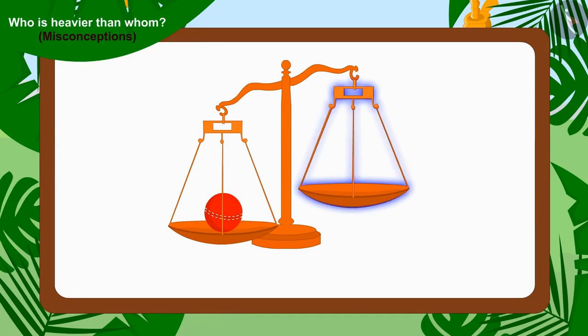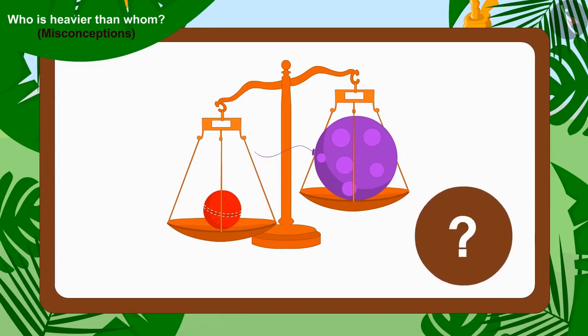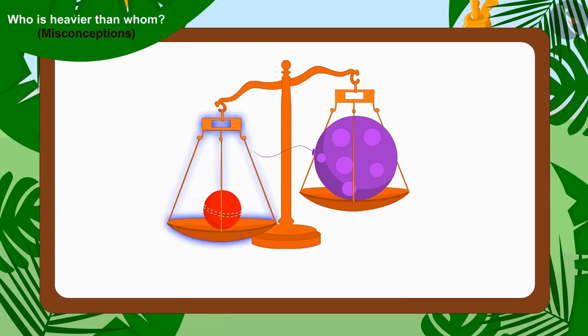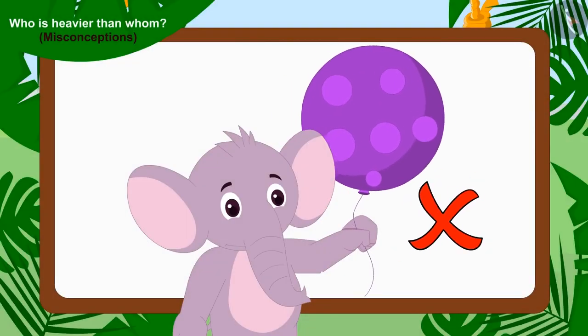Children, can you tell whose toy is heavier? Yes, the plate that contains Chanda's cricket ball has dipped downwards. This means Chanda's cricket ball is heavier than Appu's balloon. This means what Appu said is not right.